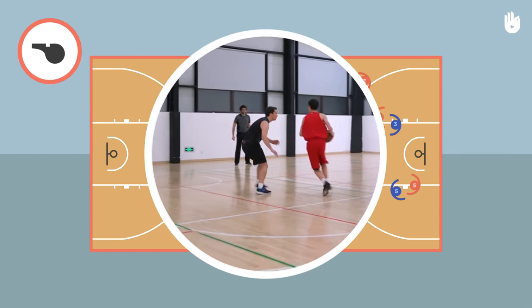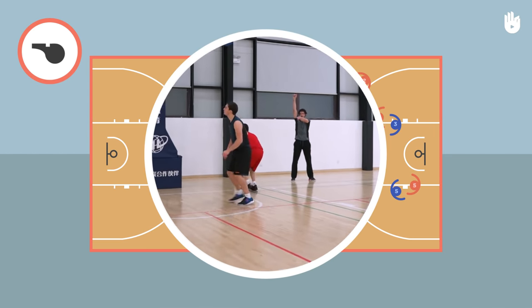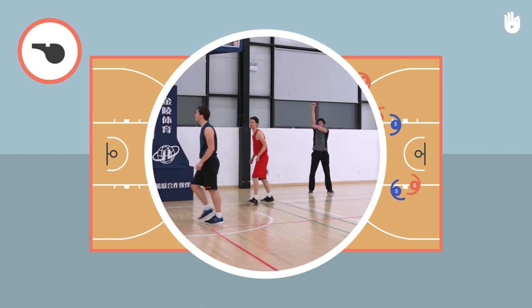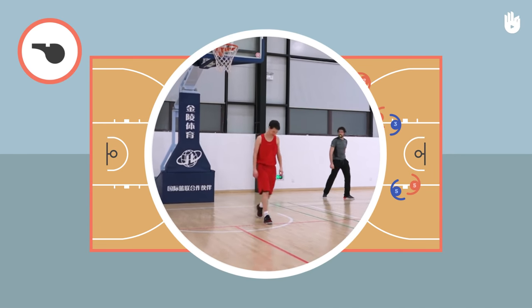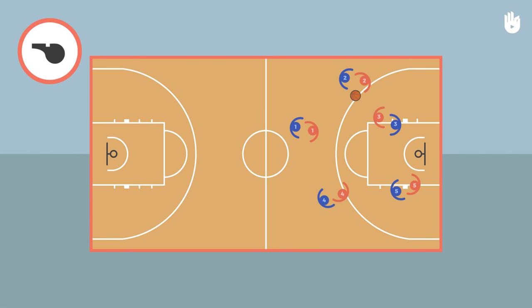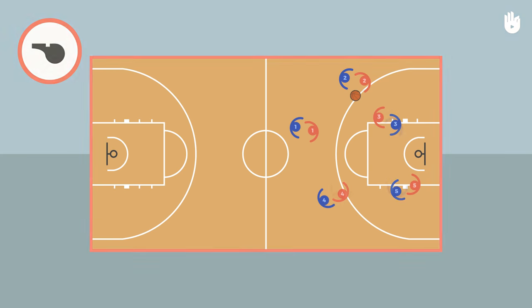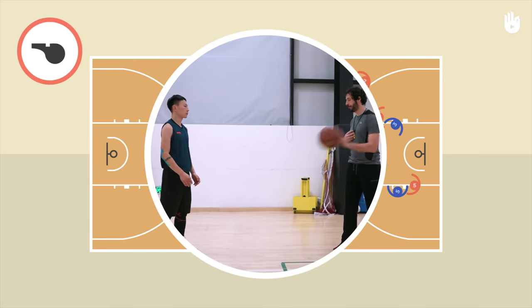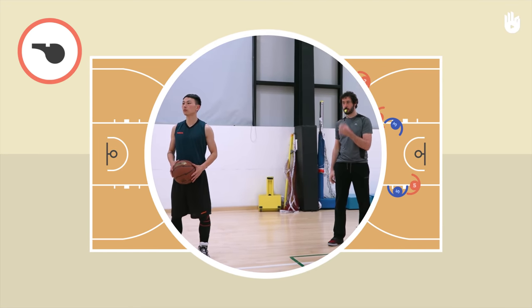In case of illegal contact, players can be sanctioned by fouls. To learn how not to commit them, watch our video on fouls. Fouls are sanctioned by turnovers or free shots for the opponent.